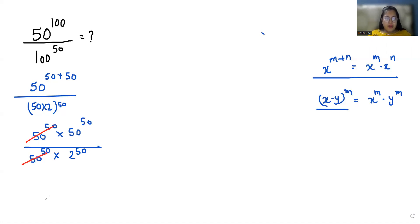Now we can cancel out from numerator and denominator 50^50. So what is left: 50^50 / 2^50. Another exponent rule: x^m / y^m we can write it as (x/y)^m.